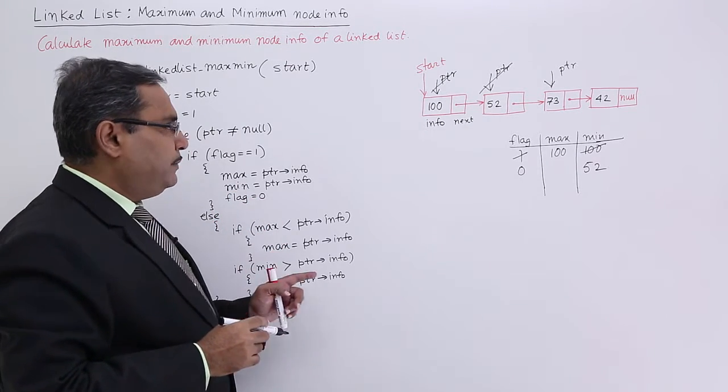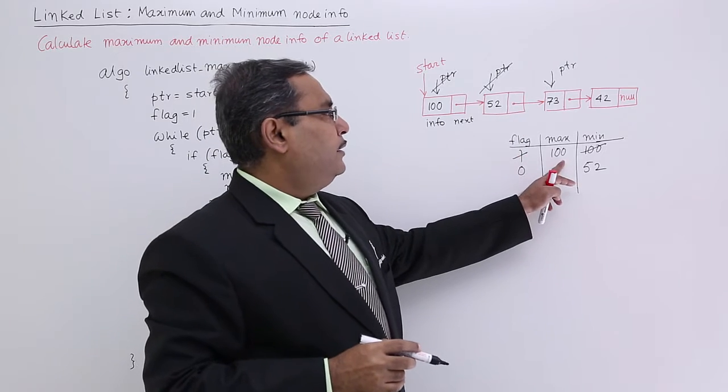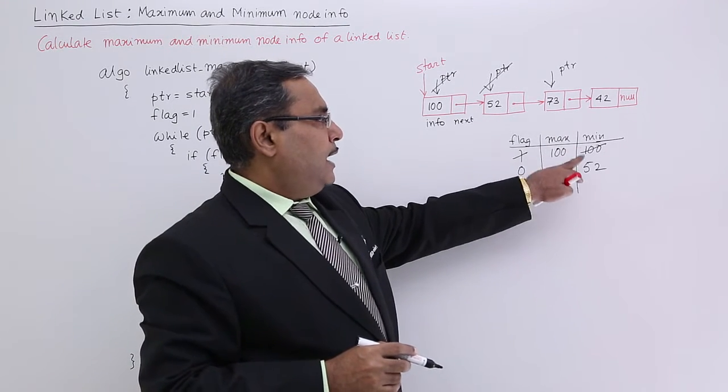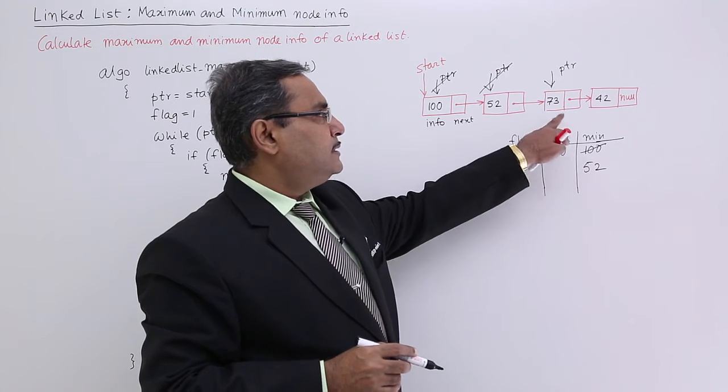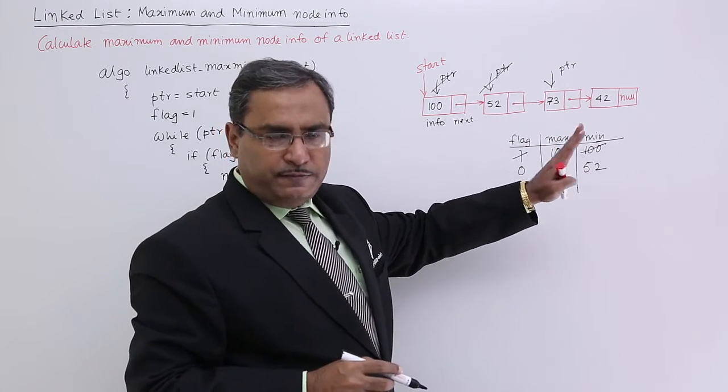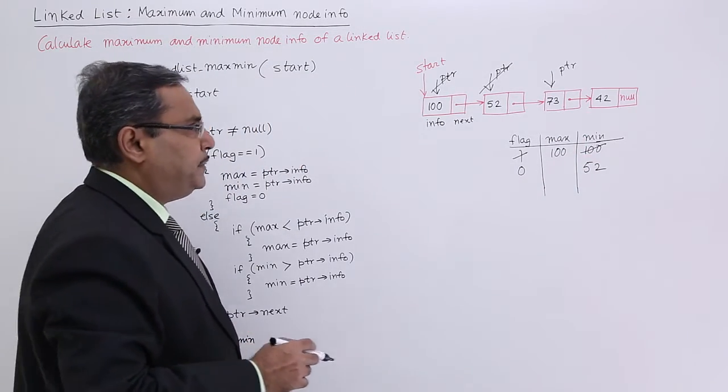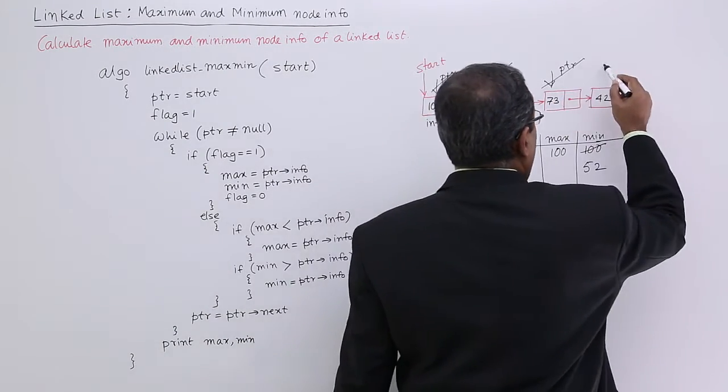It will check with max and min. Now 100 is greater than 73, so max does not require updation. And 52 is greater than 73 is false—that means 52 is lesser than 73—so 52 will not get updated. The last instruction is ptr = ptr->next, so now ptr will be pointing to this particular node.